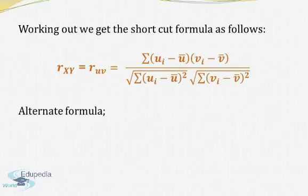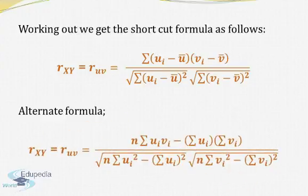The alternate formula is given by n times summation u_i v_i minus summation u_i multiplied by summation v_i, divided by square root of [n times summation u_i squared minus (summation u_i) squared] multiplied by square root of [n times summation v_i squared minus (summation v_i) squared]. Now if you look at these two formulas, you see that they are exactly the same, just your x's and y's are replaced by u's and v's.